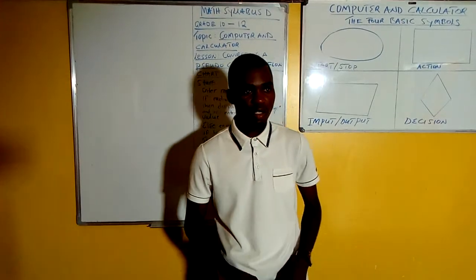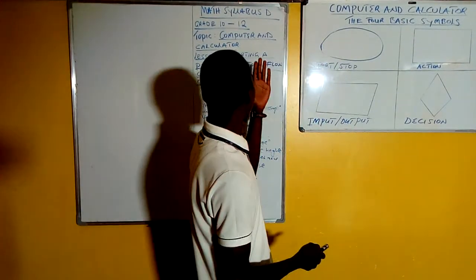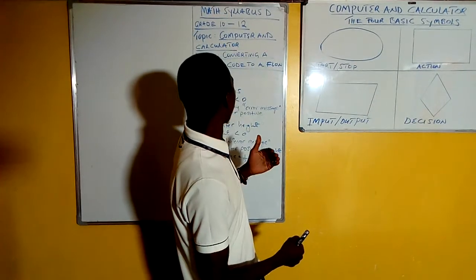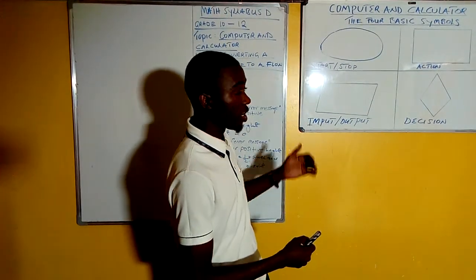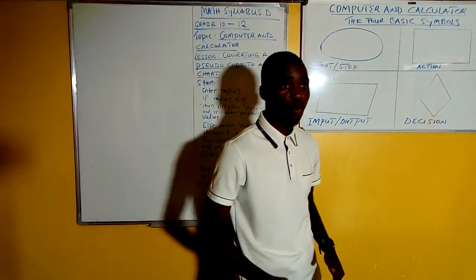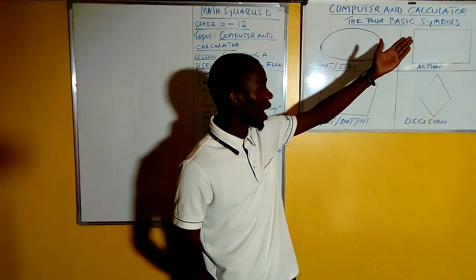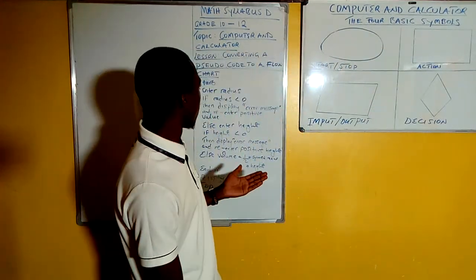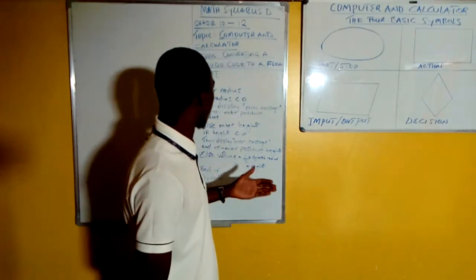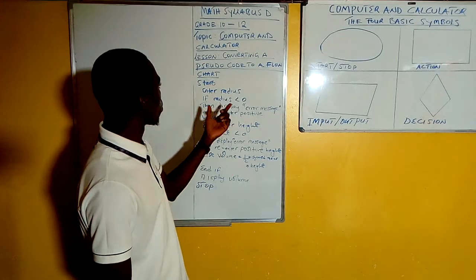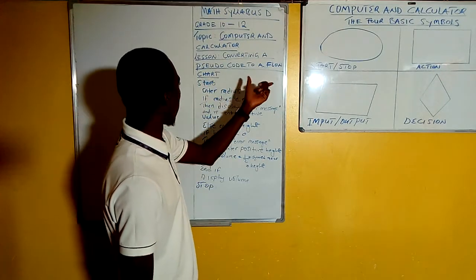Welcome to today's lesson. We are looking at mathematics for grade 10 to grade 12 including GCE, and the topic we are looking at is computer and calculator. The specific objective we are trying to achieve today is on how to convert a pseudocode to a flowchart.